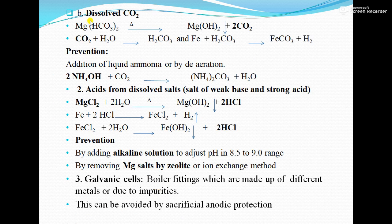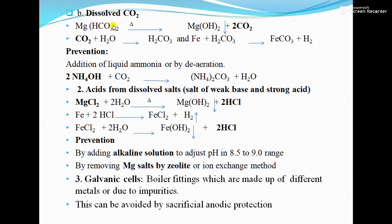Second is dissolved CO₂. Carbon dioxide is generated in water when water is heated and contains temporary hardness like magnesium bicarbonate, which converts into magnesium hydroxide precipitate and two molecules of CO₂. Also, during the journey of water from clouds to the earth, gases like CO₂ and SO₂ get mixed in. CO₂ reacts with water to form carbonic acid, which reacts with the iron boiler metal to produce ferrous carbonate.